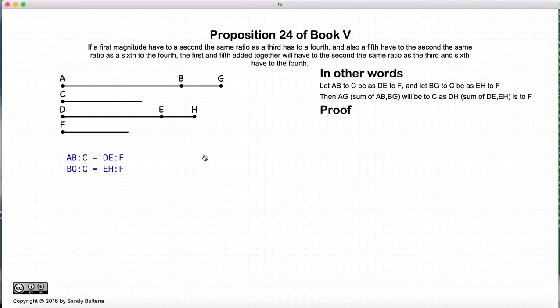So let's begin our proof. Again we start with our original conditions: AB to C is equal to DE to F and BG to C is equal to EH to F. Now, since BG to C is equal to EH to F, the inverse is also true such that C to BG is equal to F to EH.